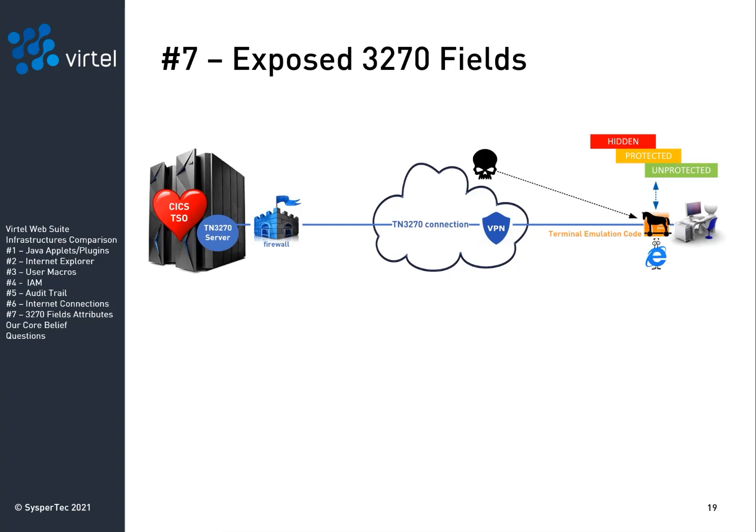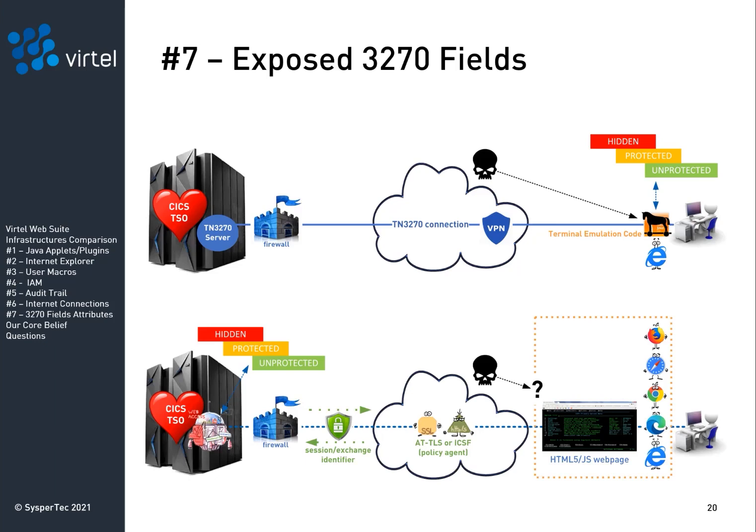Vulnerability number seven: exposed 3270 fields. 3270 application developers can set the 3270 screen fields to hidden, protected, or unprotected. With legacy 3270 terminal emulators, those settings are enforced by the TN3270 emulation code running on the user device. If that code is compromised by a cyber attack, the attacker may be able to see the hidden fields and change the protected fields. Vertel enforces the 3270 field settings on the host itself, behind the host firewall. Vertel doesn't send hidden fields over the internet. Vertel terminates the terminal emulation session if protected fields come back changed from the user's device.